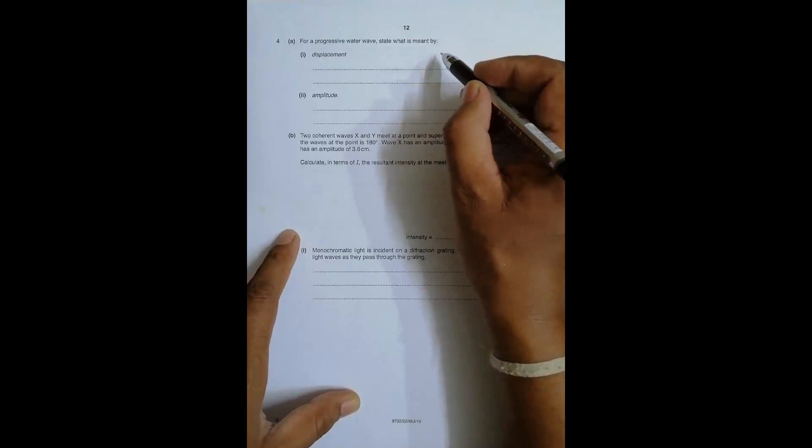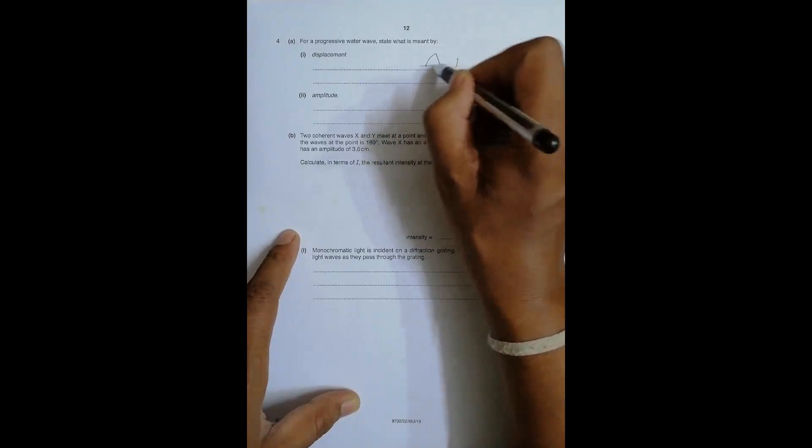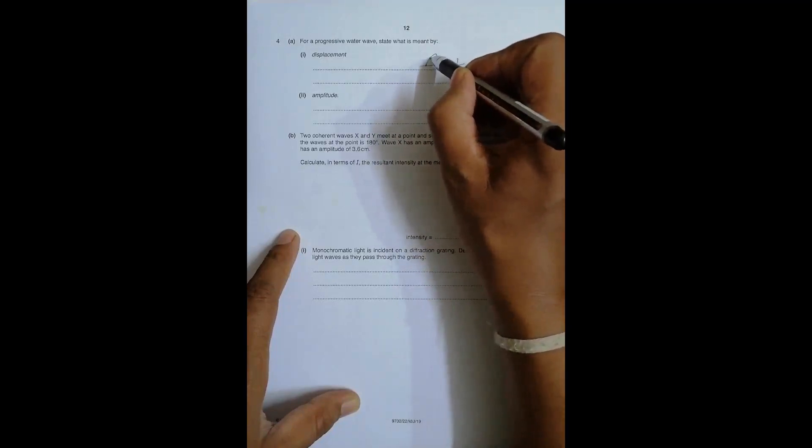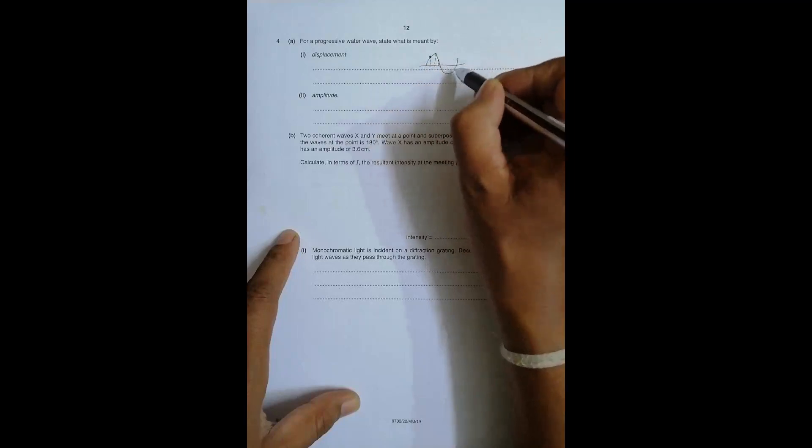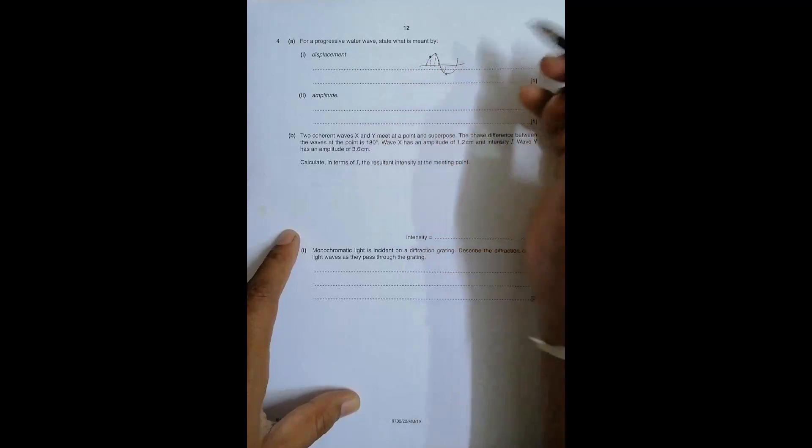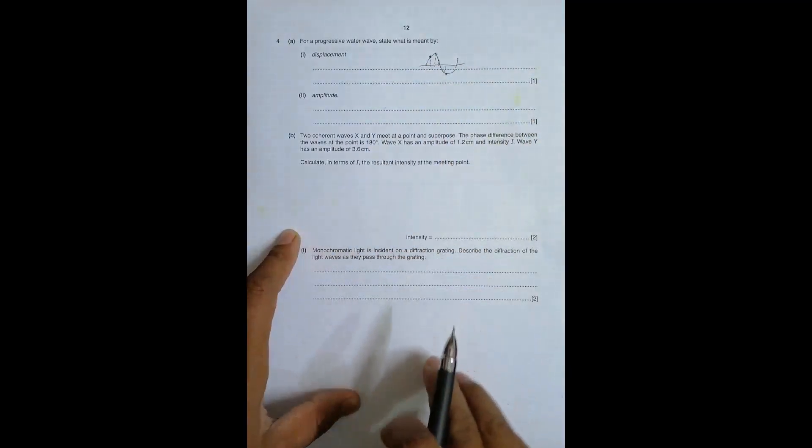So if we have a wave like this, right now the particle here has displacement like this, the particle here has displacement like this, and so on. Next is amplitude, so it is the maximum displacement possible on either side.